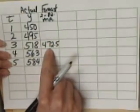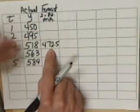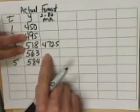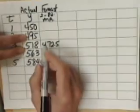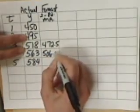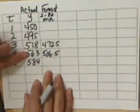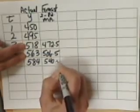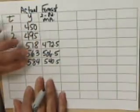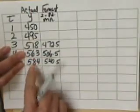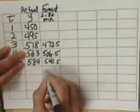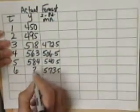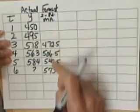Then you drop the oldest data value out and pick a new one. So now we're working with 495 and 518 — average those two and record it as the forecast for the next period: 506.5. Drop the oldest out, pick a new one: 518 and 563 average gives us 540.5. Drop again, and with the next two we get a forecast of 573.5 for time period 6.